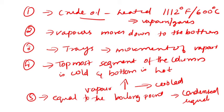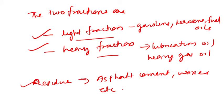The crude oil is heated into vapors at a temperature of 600 degrees Celsius. The formed vapors move down to the bottom of the column. The trays allow the movement of vapor, and the topmost segment of the column is cold while the bottom is hot. The vapor rises to the upper portion of the column and tries to get cool. When the substance in the vapor reaches its boiling point, a condensed liquid is formed and collected by the trays. There are two fractions — light fraction (gasoline, kerosene, fuel oils) and heavy fraction (lubricating oil, heavy gas oil) — and residues (asphalt, cement, waxes) collected from the bottom.